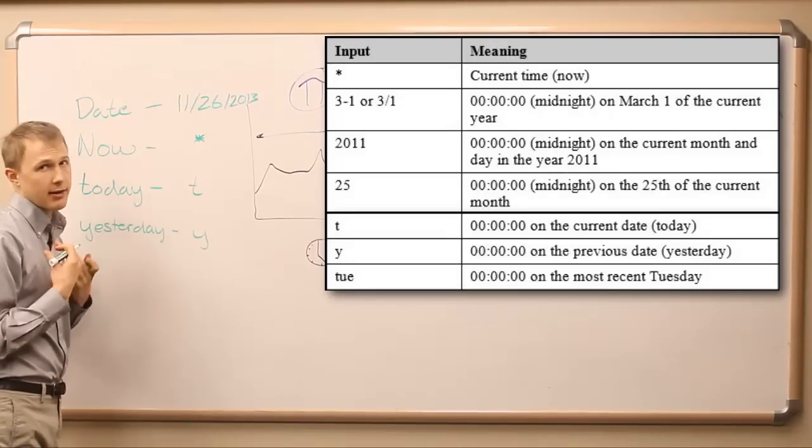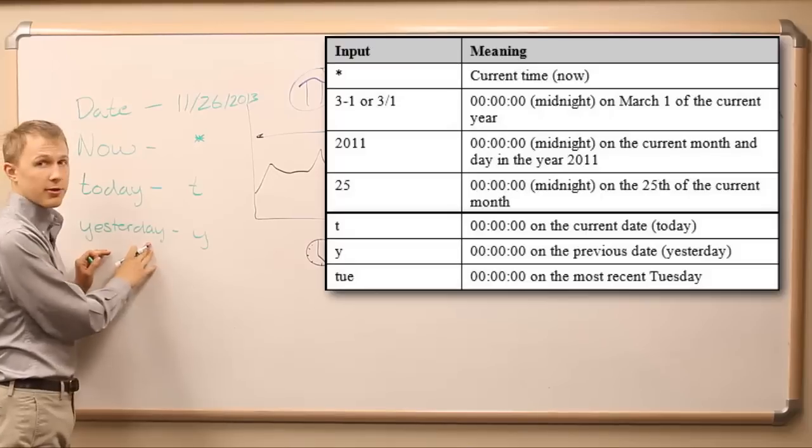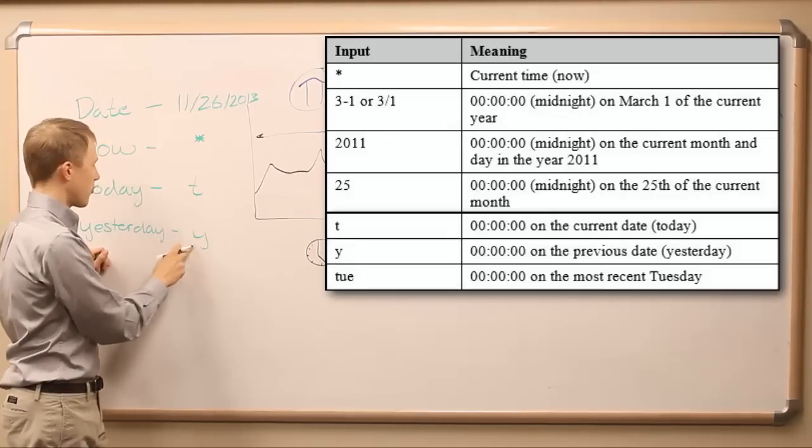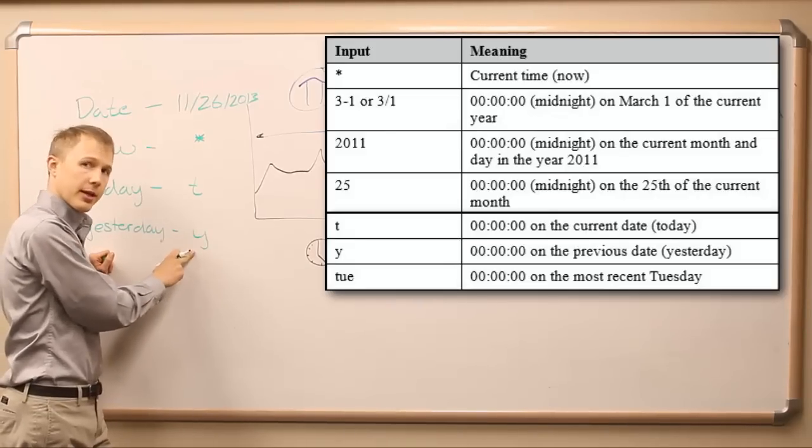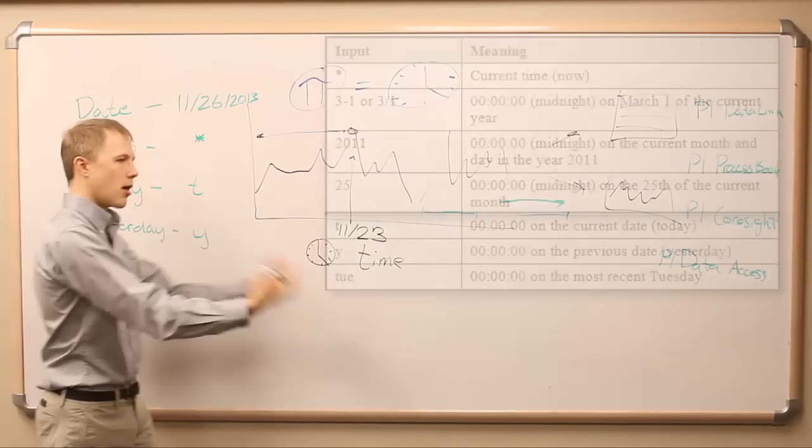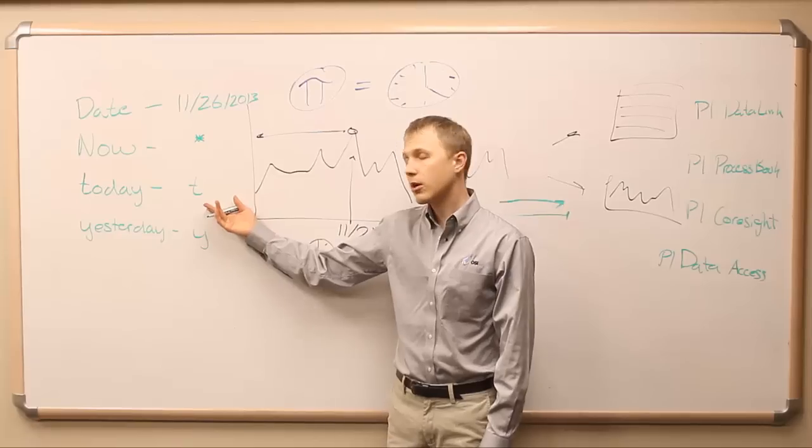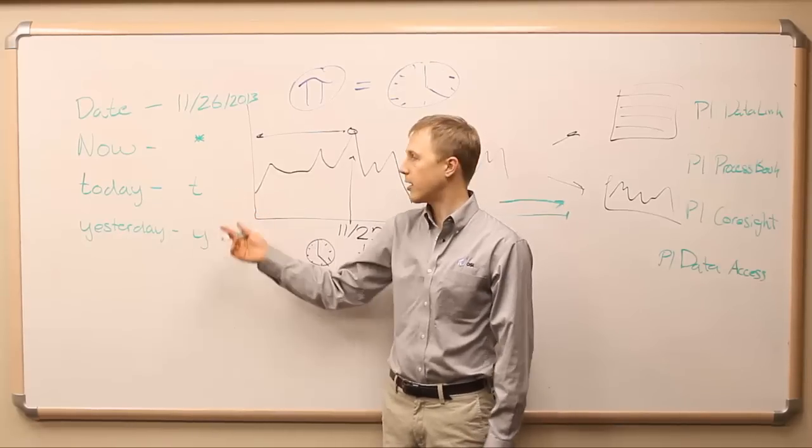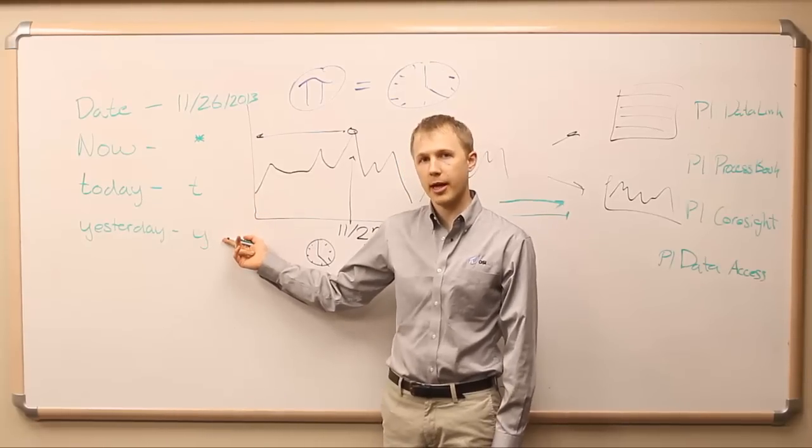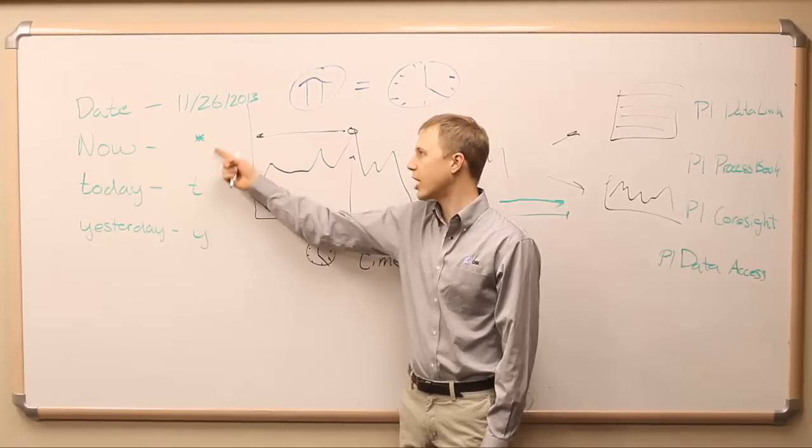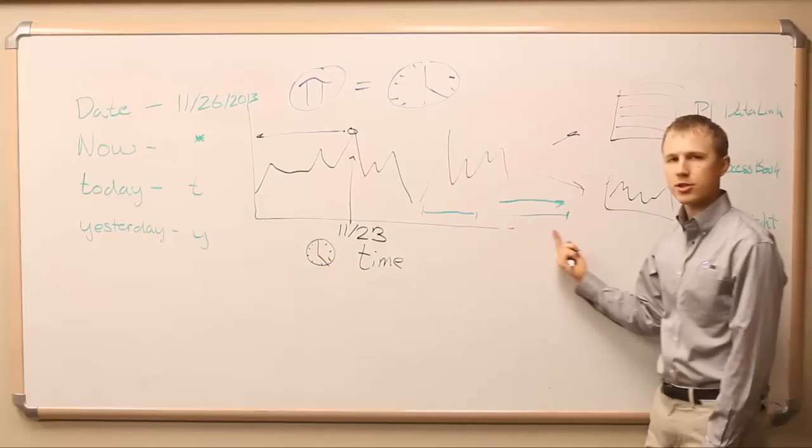So today right now is Friday, and yesterday would be Thursday. So T would refer to Friday morning at midnight, and Y would refer to Thursday morning at midnight. And then tomorrow, when tomorrow is Saturday, T will now refer to something new. T will refer to Saturday morning at midnight, and Y will refer to Friday morning at midnight. So, the power of these symbols right here is that they're going to change and adapt as time marches on.